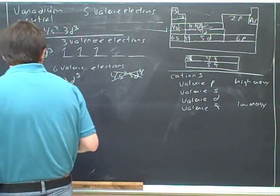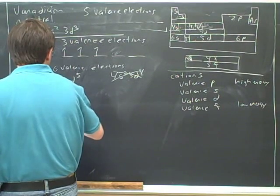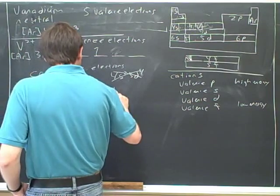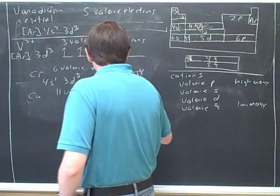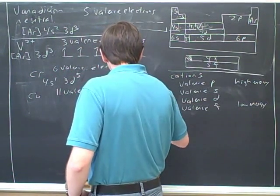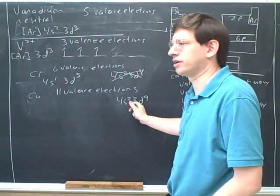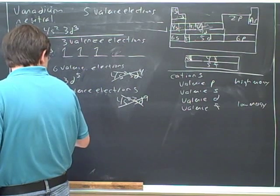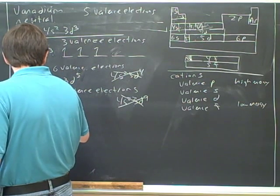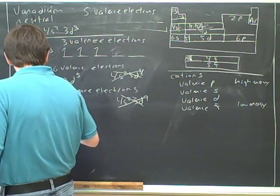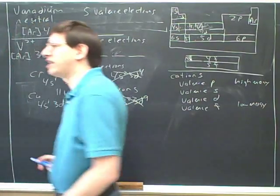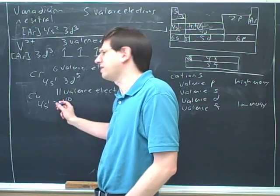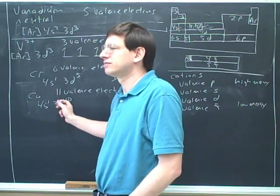How many valence electrons does copper have? Well, copper has 11 valence electrons. The periodic table would predict that this would be the electron configuration. But that turns out experimentally to be false. And in fact, the electron configuration for neutral copper is this. And sometimes this is explained by saying that nature likes having all the d electrons filled.